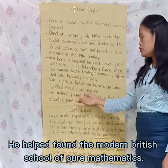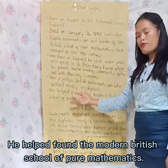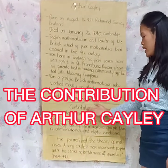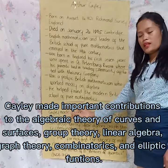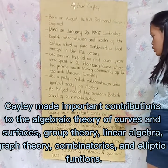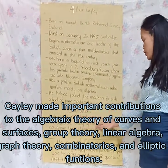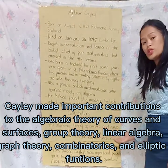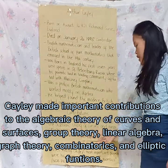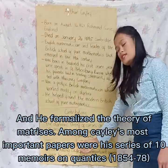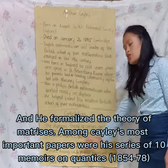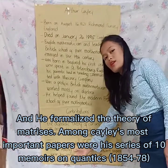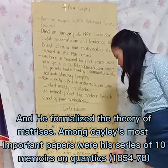He helped found the modern British School of Pure Mathematics. The contributions of Arthur Cayley: Cayley made important contributions to the algebraic theory of curves and surfaces, graph theory, linear algebra, combinatorics, and elliptic functions. He also formalized the theory of matrices. Among Cayley's most important papers were his series of memoirs on quantics, 1854 to 1878.